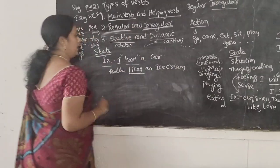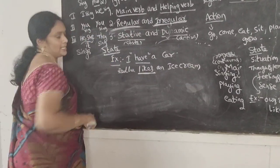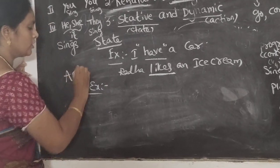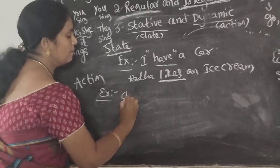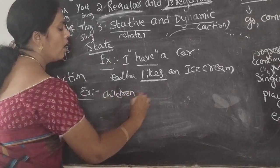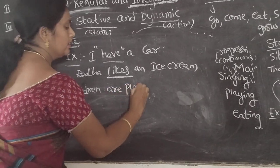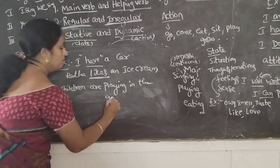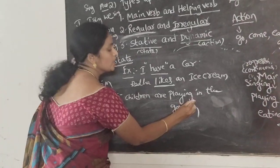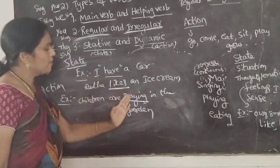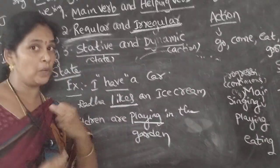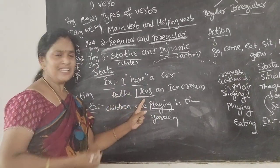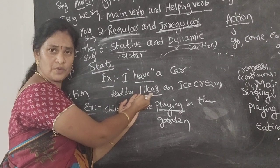Coming to action verbs: children are playing in the garden. Here I used 'playing' — why? Because this is a physical activity, we can see it. Whereas here 'likes' — is Rana doing any physical activity? No. It says that she likes something — that means an emotion is being expressed.